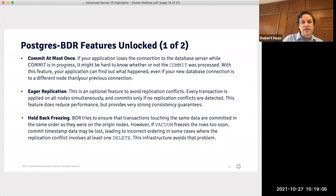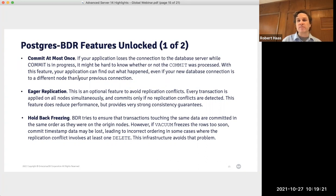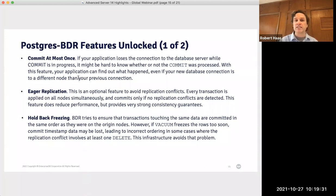The third feature is the ability to hold back freezing. BDR tries to ensure that transactions touching the same data are committed in the same order on every replica as on the origin node. However, if vacuum freezes rows before replication is completed, commit timestamp data could be lost, potentially causing out-of-order replication on the replica. There are manual tuning workarounds, but this infrastructure avoids the problem with less effort on the part of the user.